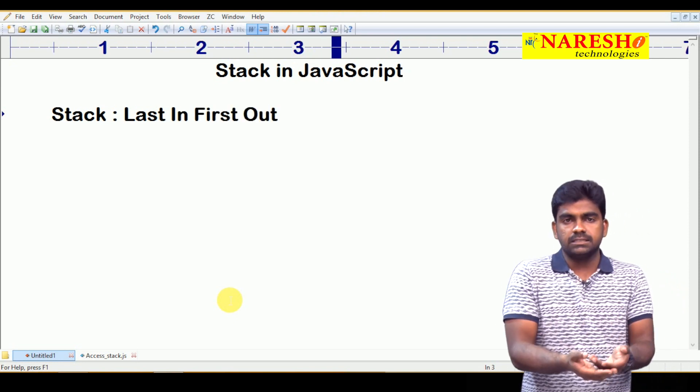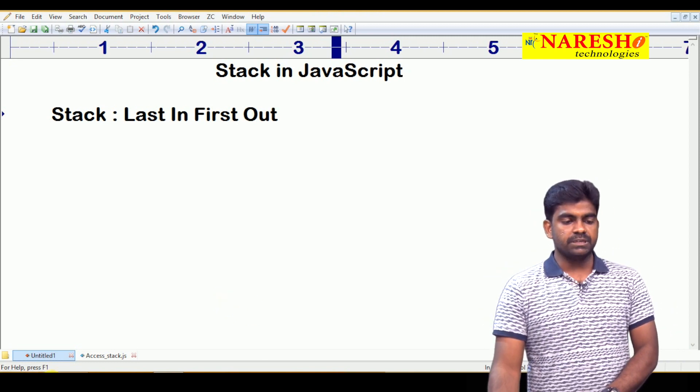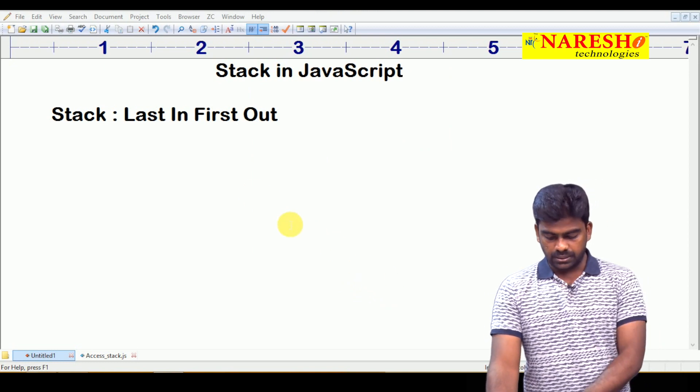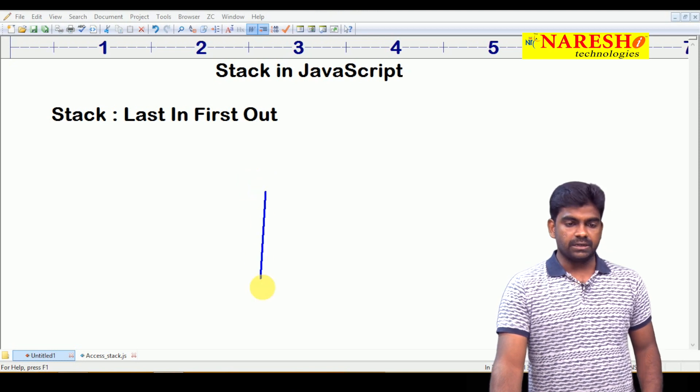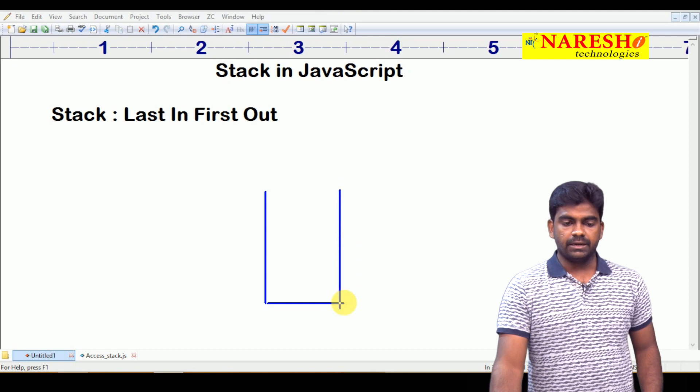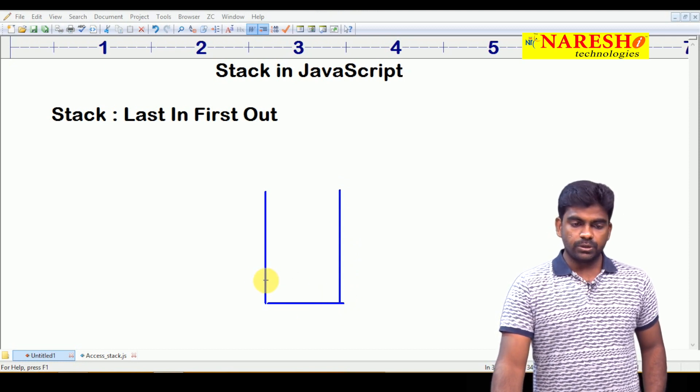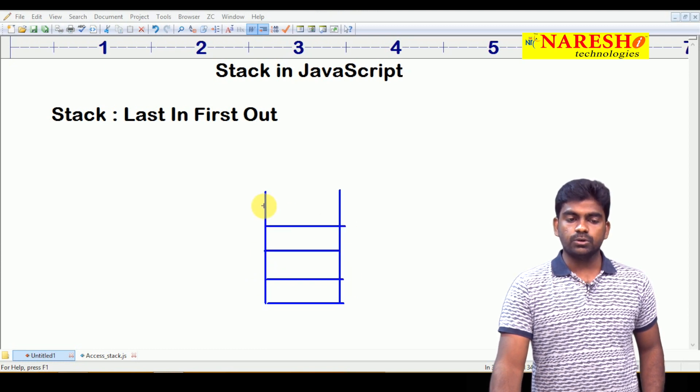What you have inserted last will come out first. How can we understand? We are taking this one as a stack, just like one array, and this is a stack where we are storing information into these things. How can we store the data?